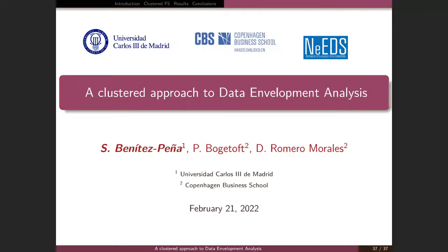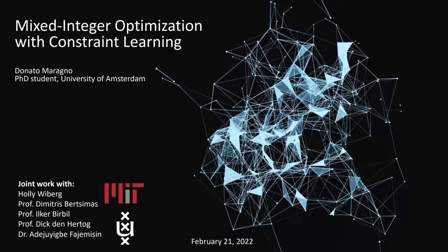Thank you Sandra. I remind the audience that we will place all questions to any of the speakers at the end. Our next speaker is Donato Maragno, a PhD student from the University of Amsterdam in the Netherlands, and he is going to talk about mixed integer optimization with constrained learning. Thank you Cristina. Thank you also to Senia, Dolores, and Emilio for making this seminar possible. Today I am going to talk about mixed integer optimization with constraint learning, which is a joint project with some people from MIT and my supervisors at the University of Amsterdam.